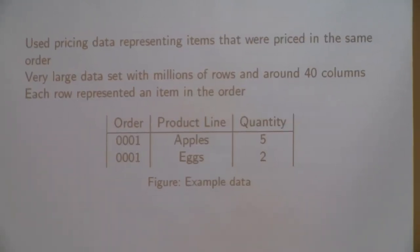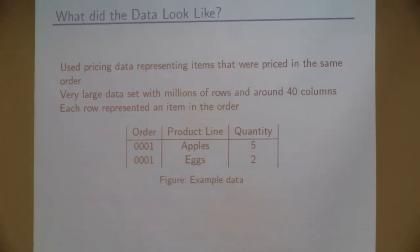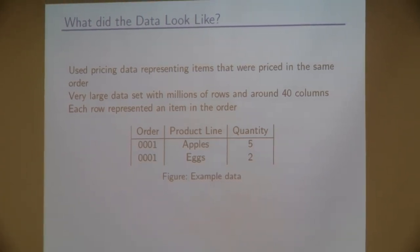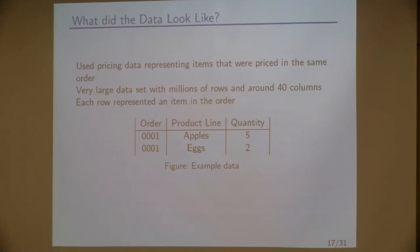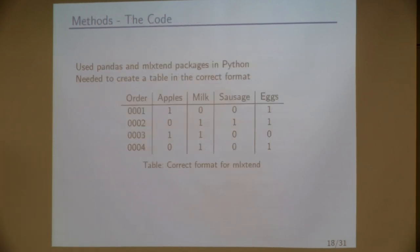So what did the data look like? We got a bunch of pricing data, which is what we used. This is for us. And that was a very large dataset. They said 8 gigabytes. And that had millions of rows and about 40 columns. Each row represents an item in order. So we have an example of what this looked like. Like if you had order one and they ordered apples, they might have ordered five of them. And I needed to get that into this format in order to put that through a program called ML Extend. And this is what it kind of should look like. A binary, if they ordered, did they order apples and eggs in order one or milk and sausage in order two. So we put that through and got a list of rules.